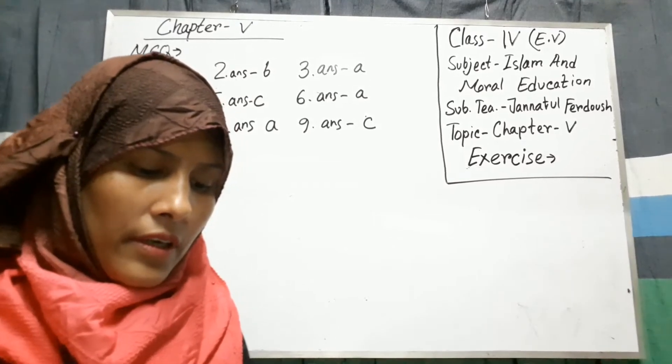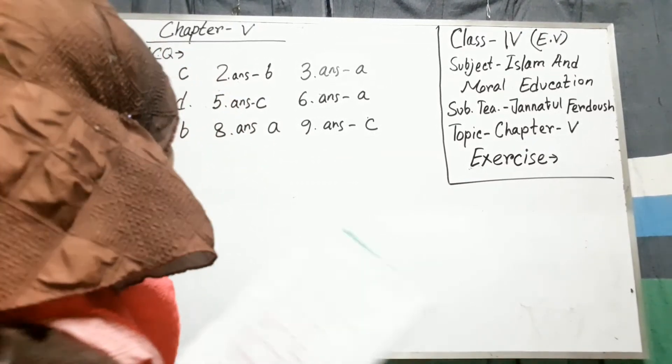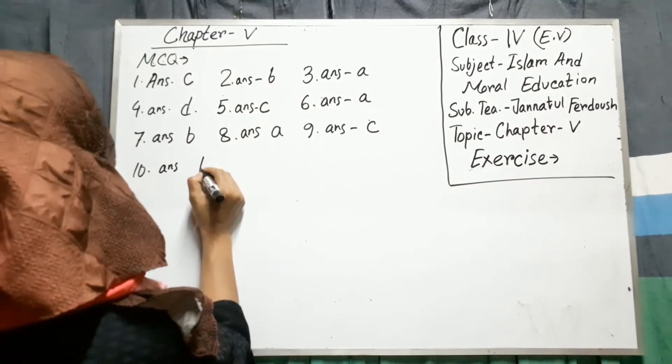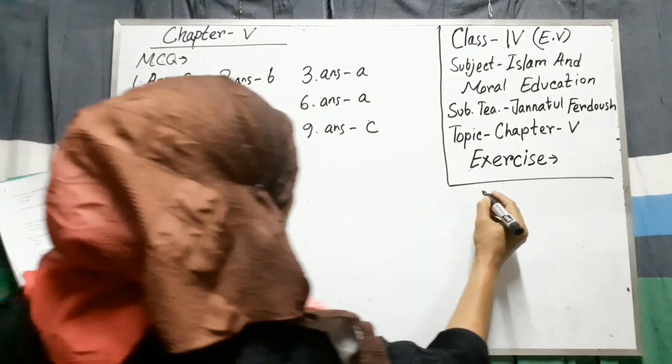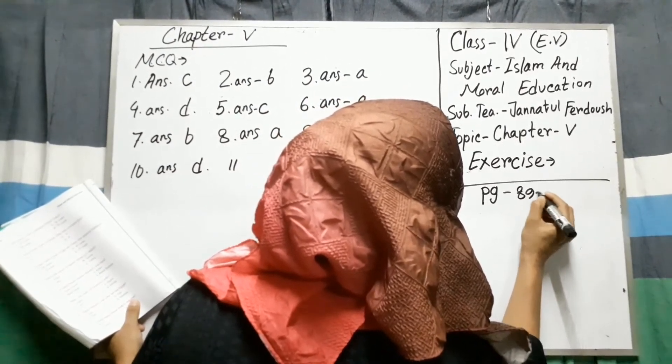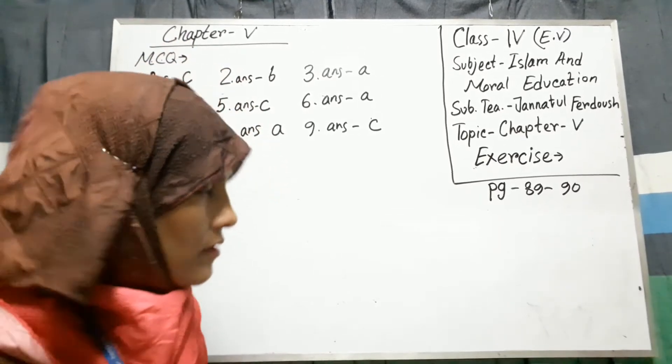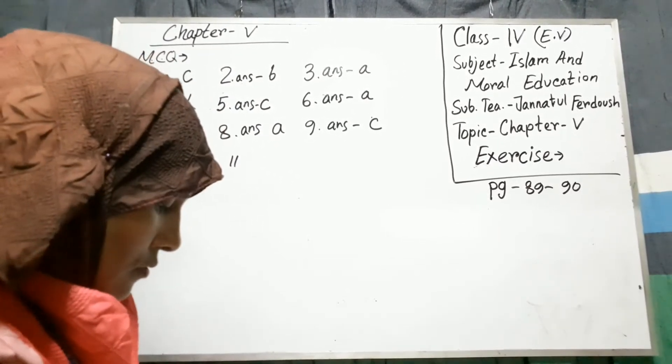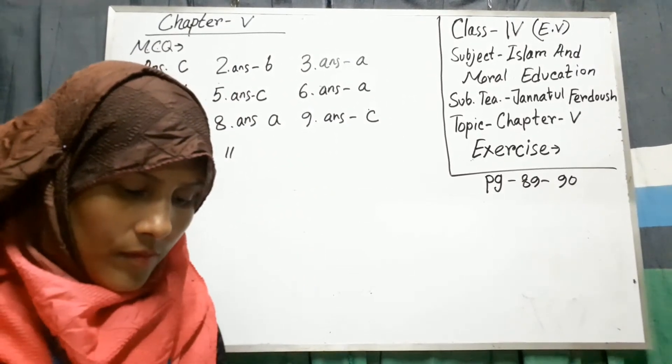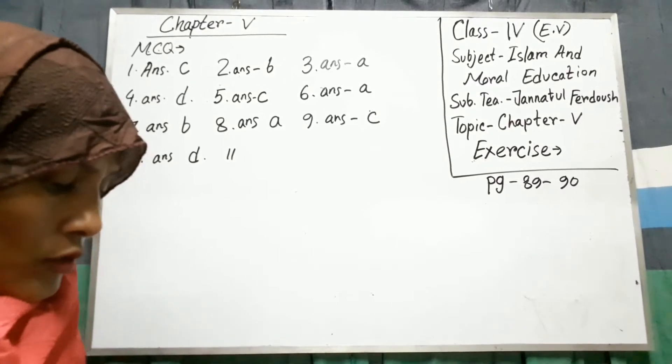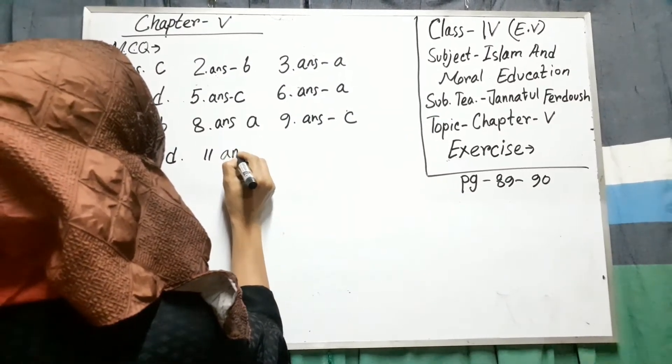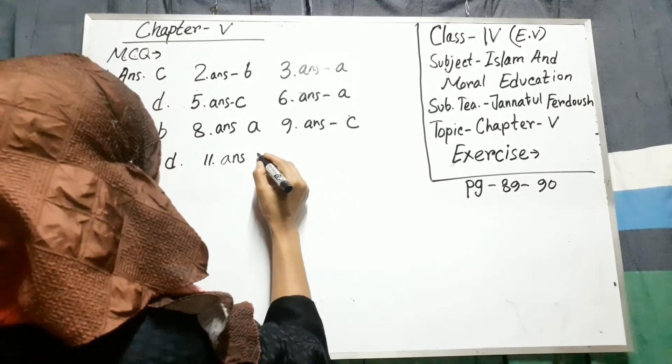Where was Musa went after leaving Egypt? Madain. Number 10. B. Number 11. Number 11. 82. 89 to 92. Fill in the blanks. Oh sorry. 21. 22.